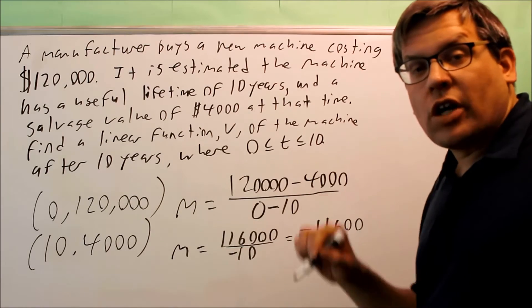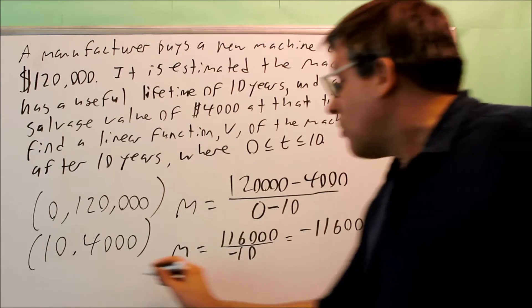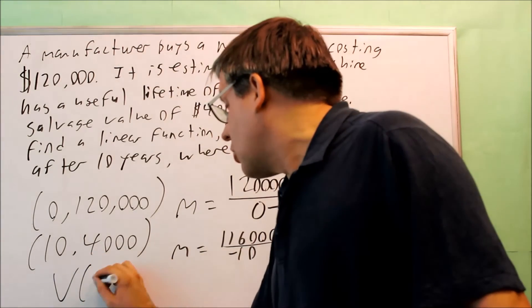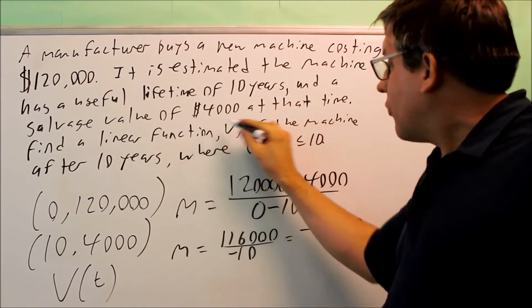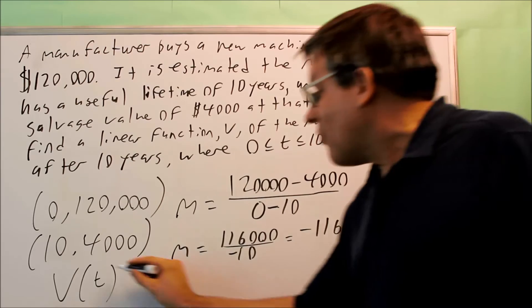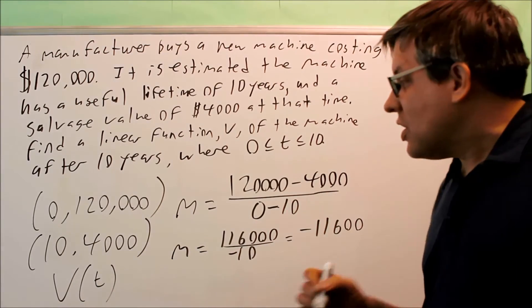All I have to do now is just write the actual equation for it. My answer is just going to be this equation. So I'm going to write it out as V of t because that's what it's asking us to do. Linear function has to be called V. The variable on the inside, instead of using x, I'm going to use t.